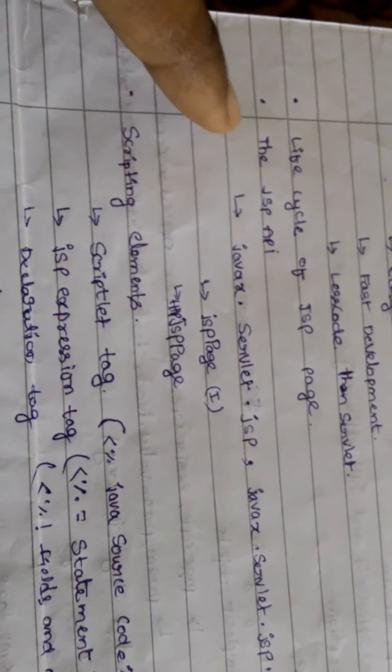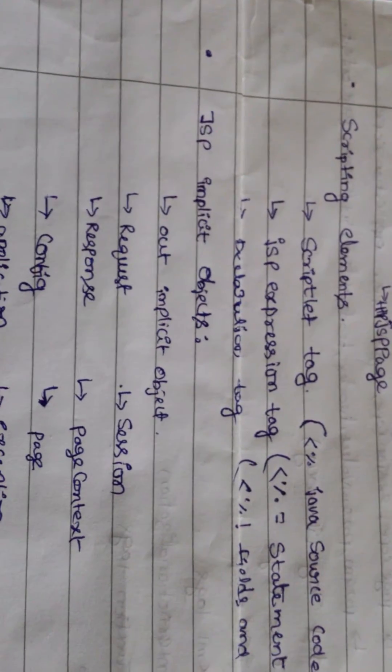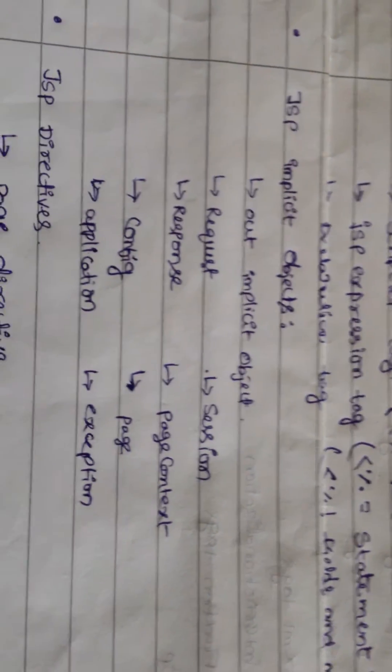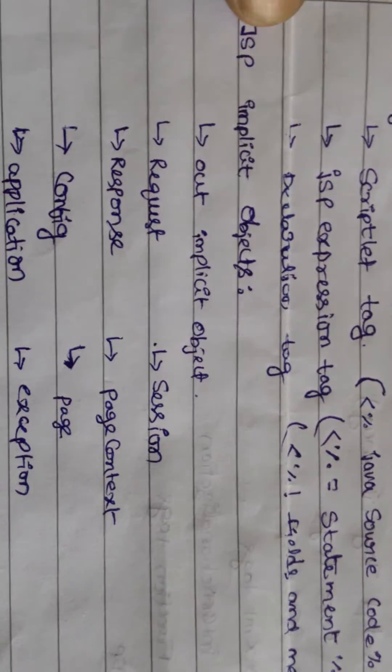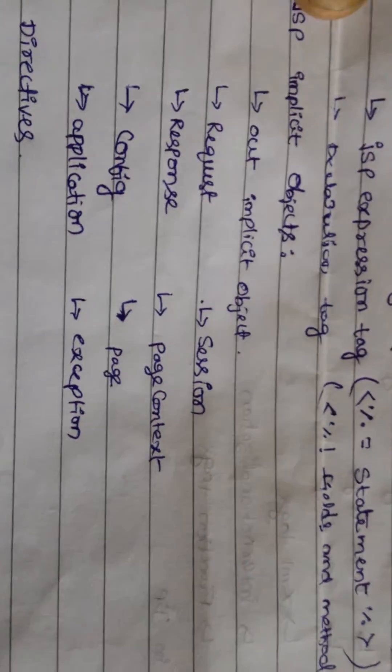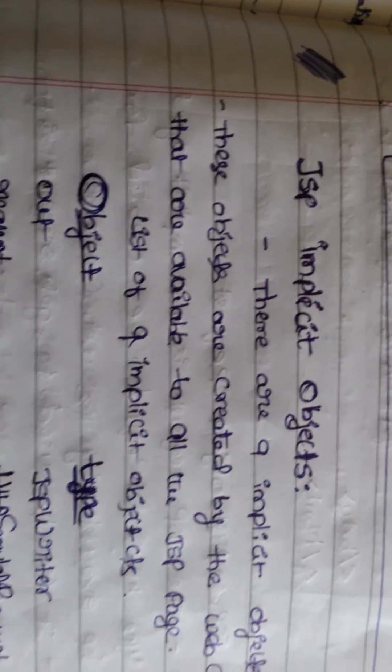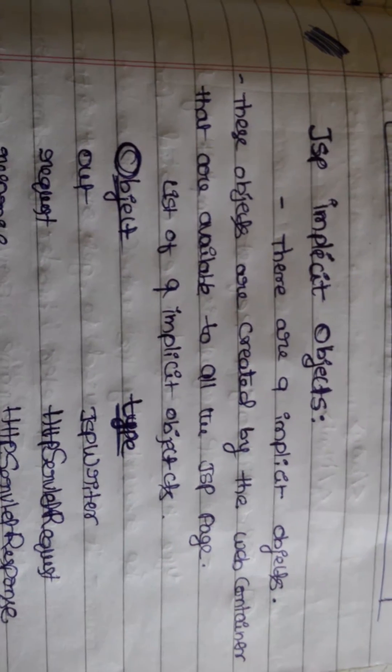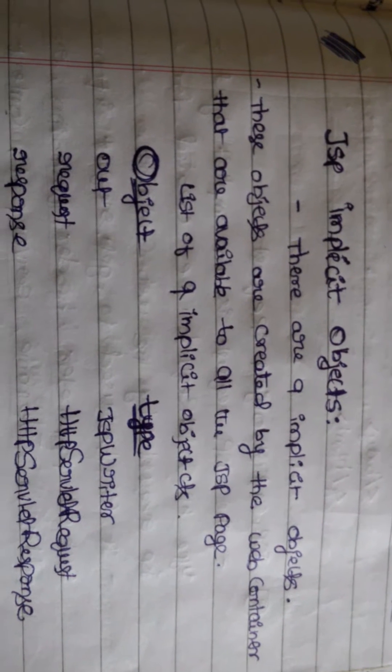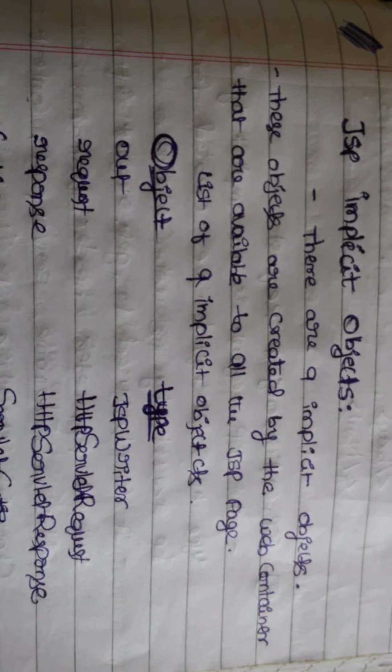These JSP implicit objects are very important. We'll see them one by one. In JSP we have nine implicit objects. These objects are created by the web container.